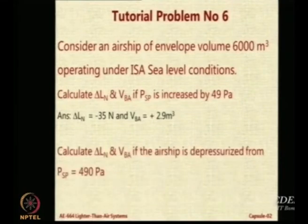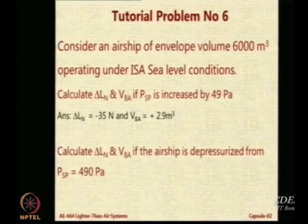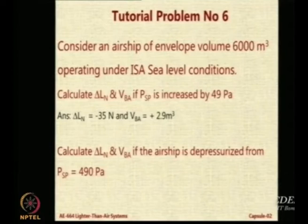Let us go to a situation when you are depressurizing the airship. Now you assume that the PSP is 490 and suddenly it becomes 0. That means you have an airship with PSP of 490 and then suddenly you brought it down to atmospheric pressure. So there is a reduction of 490 — take delta PSP as minus 490.